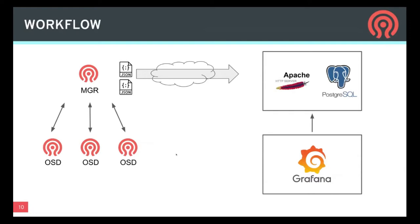The workflow is as follows: on the Ceph cluster side, the manager collects information from all of the daemons in the cluster, compiles a couple of reports, and sends them to the telemetry backend. There we have an Apache server and a Postgres database, and a couple of Grafana instances that get information from the Postgres database.